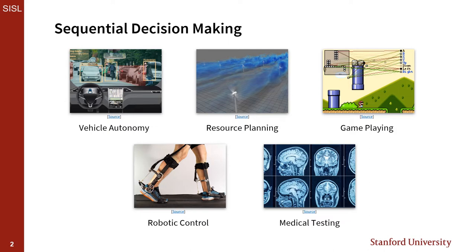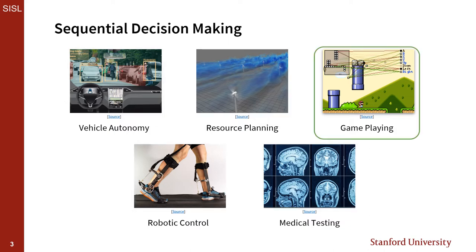A lot of the most recent advances in sequential decision-making have applied here to video games. The reason is that many recent advances in automated decision-making are very data-intensive, and video games are one of the few domains in which large amounts of high-fidelity data can be generated cheaply and quickly. The research in this thesis will address challenges in scaling up modern decision-making techniques from video games to more complex real-world problems.